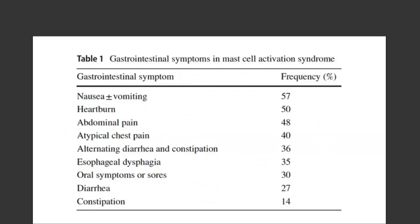Common GI symptoms associated with mast cell activation syndrome, based on frequency reported by patients, include nausea and sometimes vomiting, heartburn, abdominal pain, sometimes chest pain, and alternating diarrhea and constipation — which is also a classic feature of IBS. Other symptoms include esophageal and oral symptoms. This is a fairly long list of very common GI symptoms that may be attributed in part to activated mast cells in the gut.